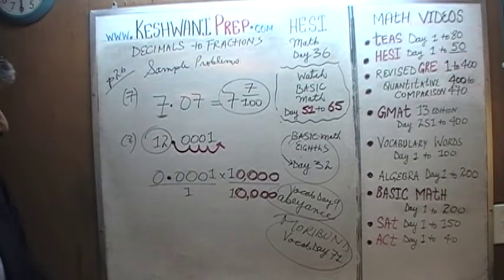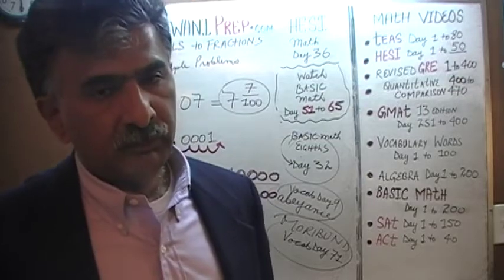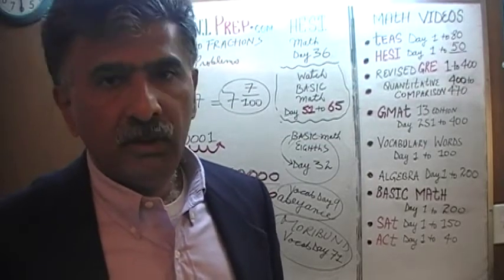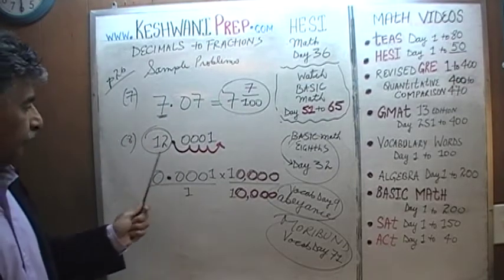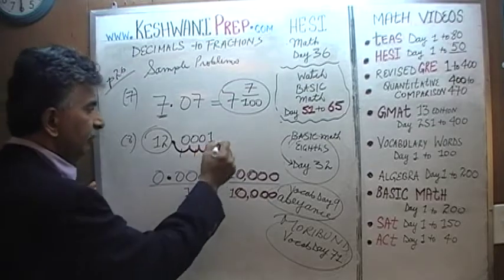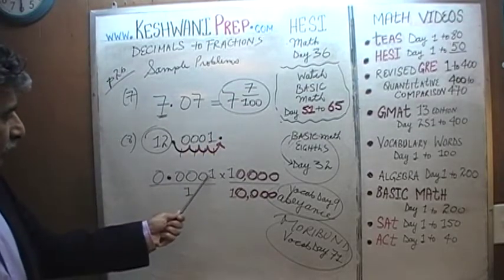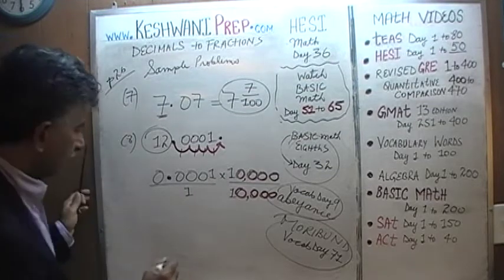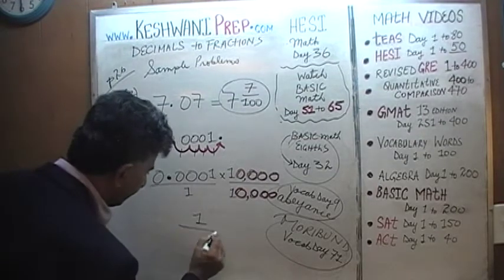In other words, multiply top and bottom by 10,000, not 1,000. 1,000 will only move the decimal three places; here we need to move it four spots. So 0.0001 times 10,000 is just 1. And on the bottom we have 1 times 10,000, which is just 10,000.